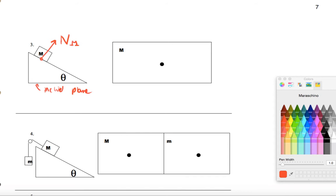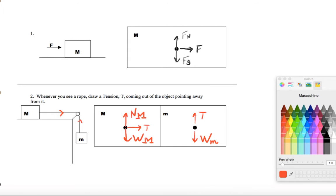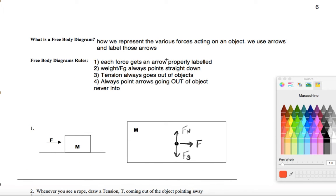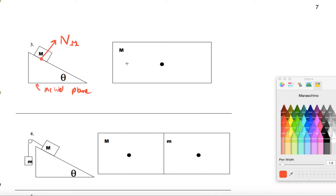And remember, the rule for weight. Weight force always points straight down. So, I don't care that there's an inclined plane there. Earth pulls the object straight down.